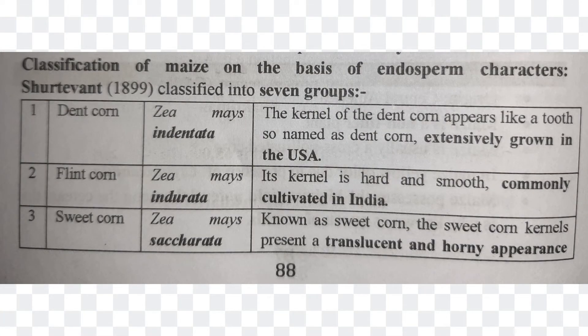The first one, Dent Corn, is Zea mays indentata. Its kernel looks like a tooth, that's why it is named Dent Corn, and this is extensively grown in the USA. Flint Corn is Zea mays indurata — its kernel is very hard and smooth, and it is mostly cultivated in India.